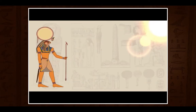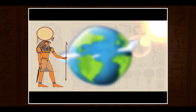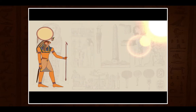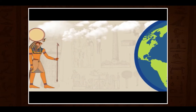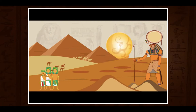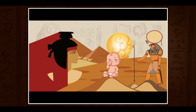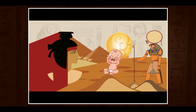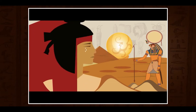Long before Ra, the sun god, had grown old and had left earth to dwell solely in the sky, he had ruled the earth and all of its inhabitants. He was able to see enough of the future to realize that any children by Nut, the goddess of the sky, would overthrow him as king. With his great power, Ra commanded that Nut should not be able to bear any child on any day of the year. This curse greatly distressed Nut.